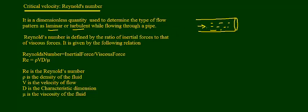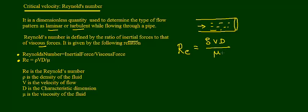Reynolds number gives us an idea about the type of flow — laminar or turbulent. It is defined as the ratio of inertial forces to viscous forces. Reynolds number is given by Re = ρVd/μ, where μ is the viscosity of the fluid, d is the characteristic dimension, V is the velocity of the fluid, and ρ is the density of the fluid.